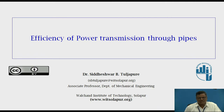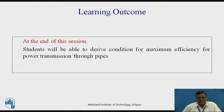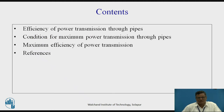In this session, we are going for the topic that is efficiency of power transmission through the pipes. The learning outcome: at the end of this session, the students will be able to derive the condition for the maximum efficiency for power transmission through the pipes. The contents: firstly, we are going to see what is the formula of the efficiency of power transmission through the pipes, then the condition for the maximum power transmission through pipes, then the maximum efficiency of power transmission, and lastly the references.